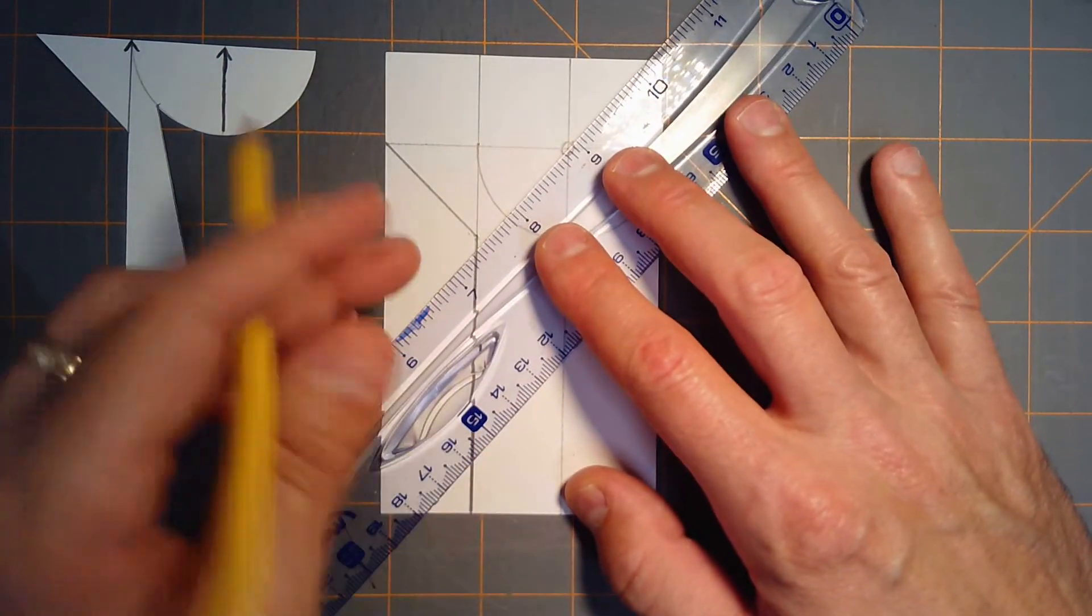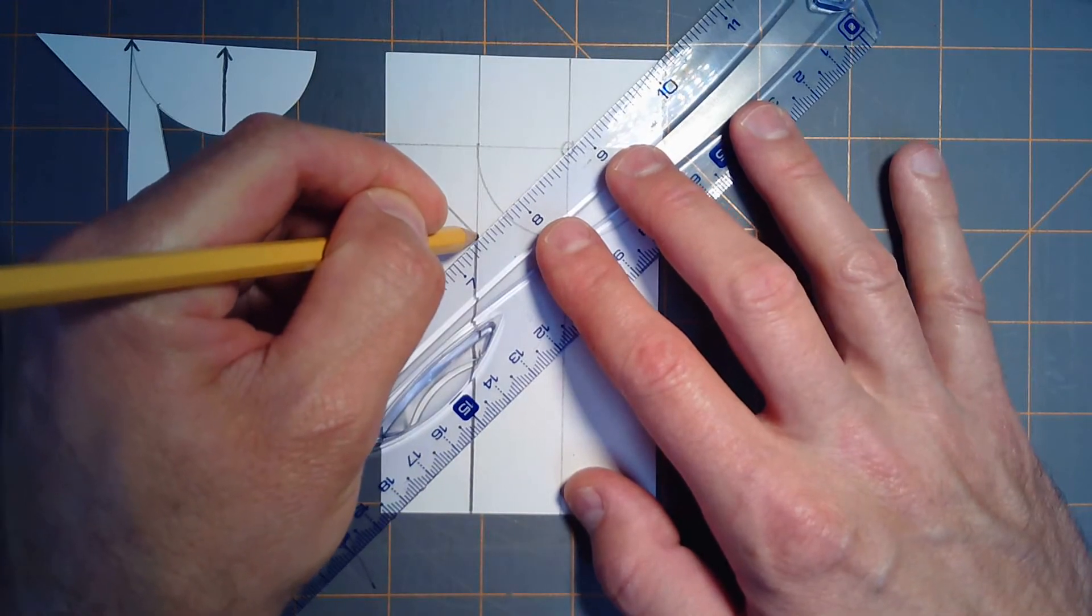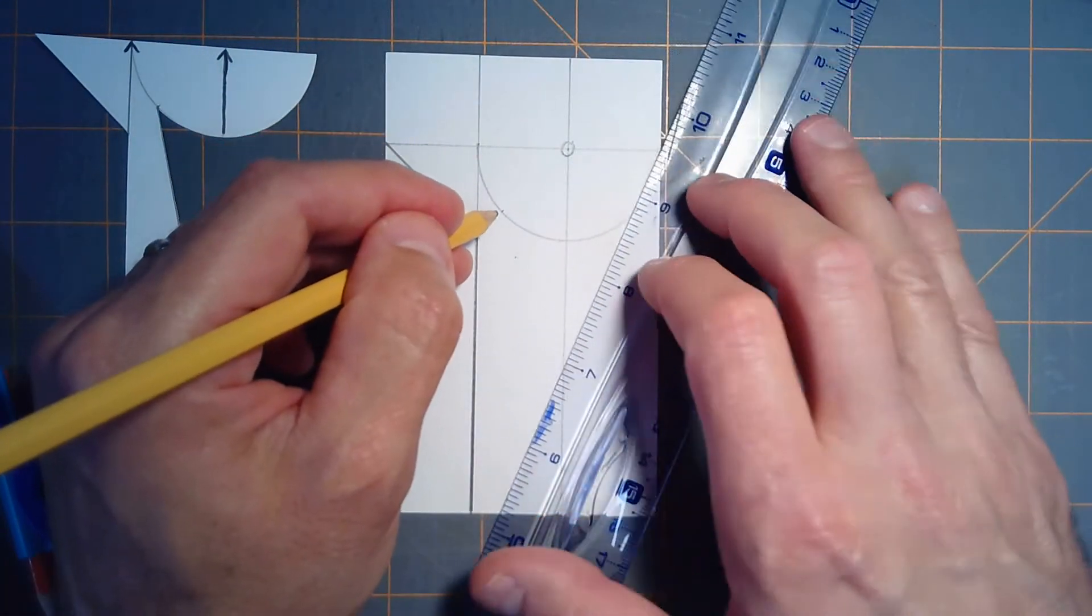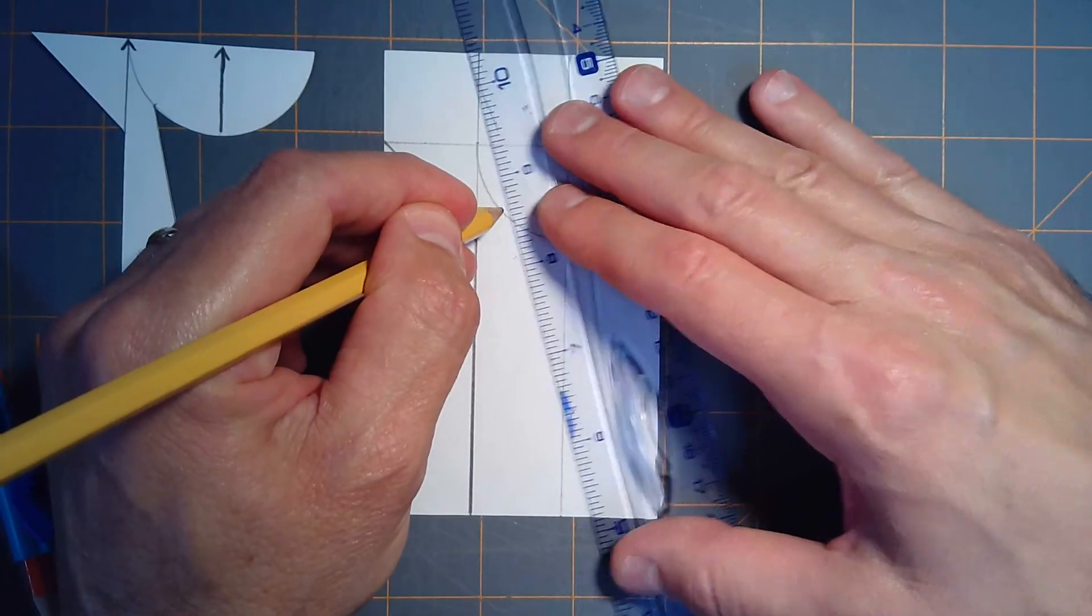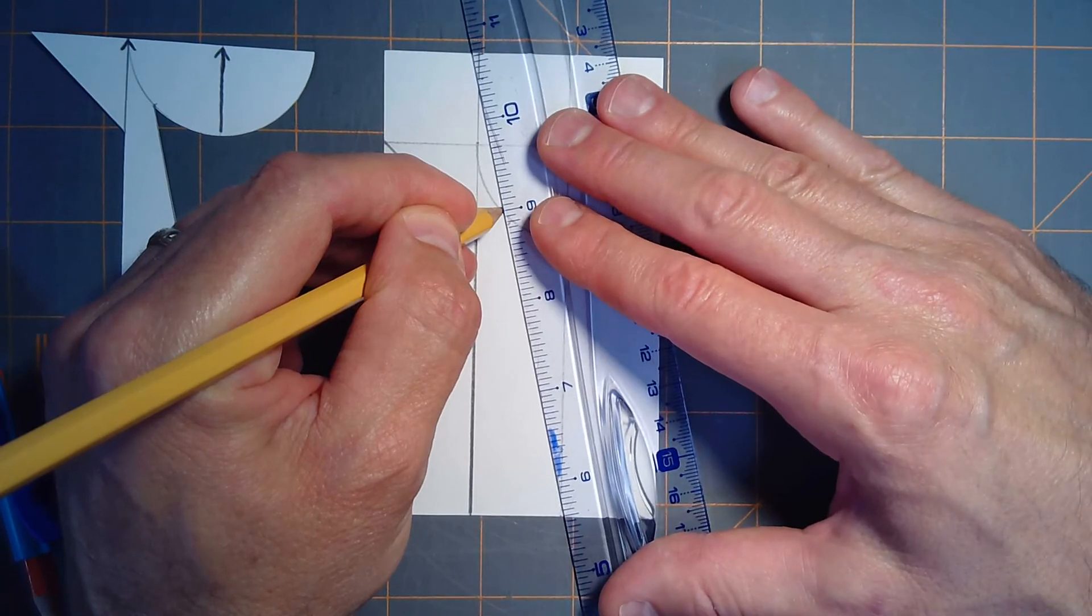I'm going to take my straight edge and align the bottom of the isosceles right triangle with the center of the semicircle, just make a little reference mark here, and then connect that reference mark to the bottom of this segment right here.